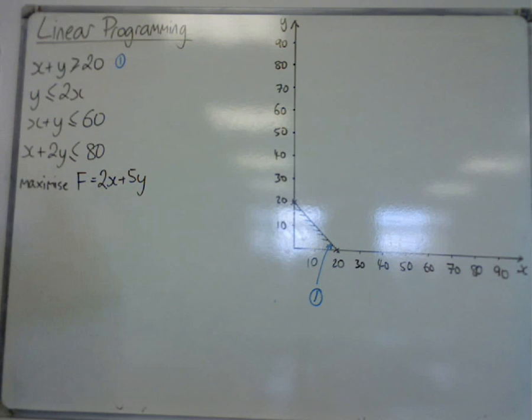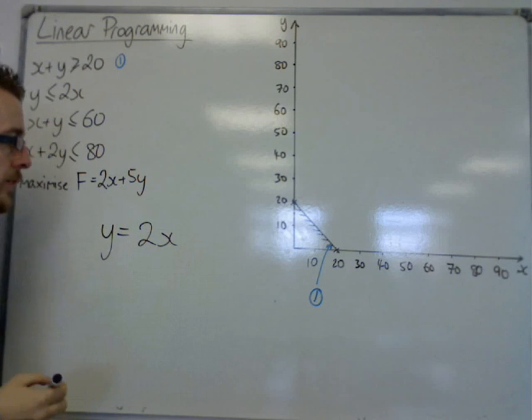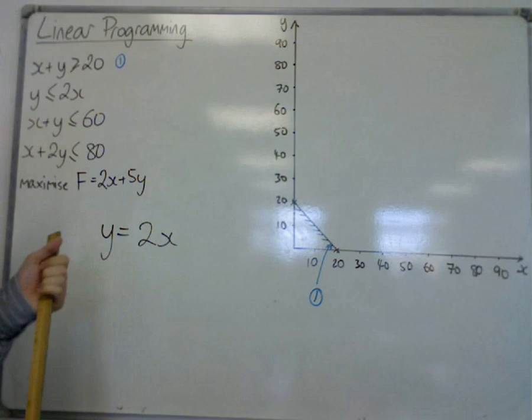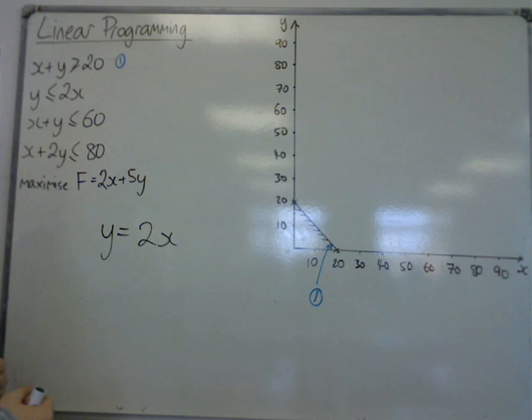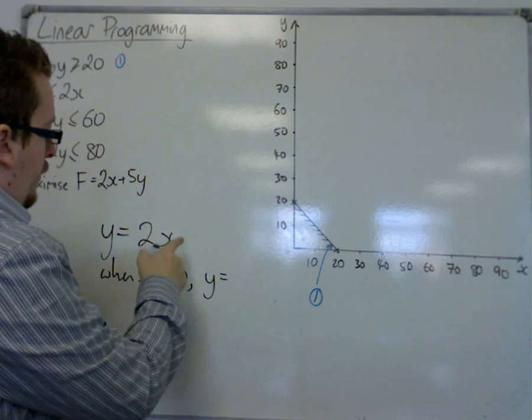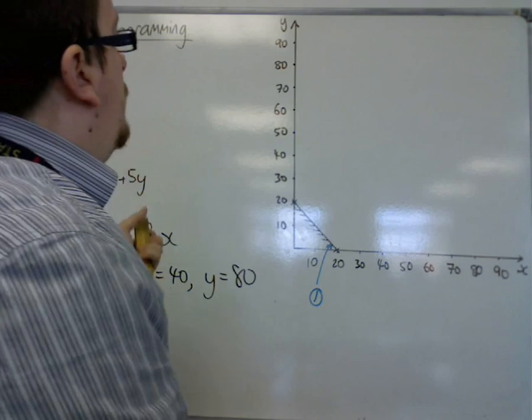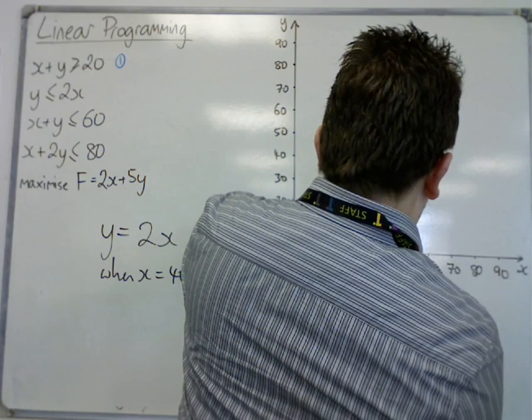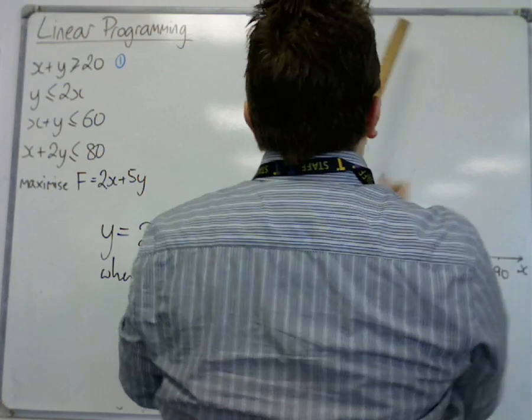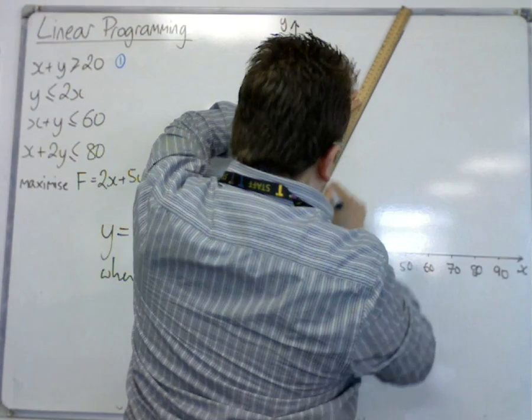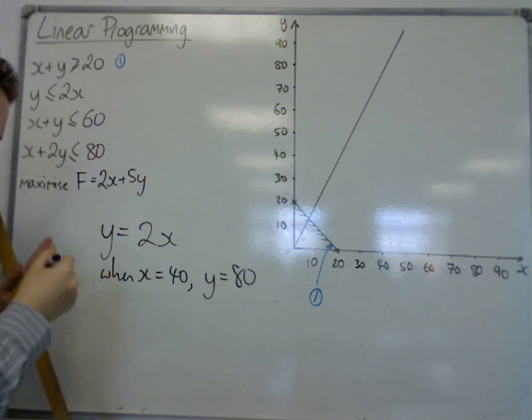Now I've got y is less than or equal to 2x. So we need to draw in the line y equals 2x. Now, you should know that y equals 2x will go through 0, 0. So we just need another point that it goes through. So for that, you could choose any point that you really like. We could try x is 40, for example. So when x is 40, y is 2 lots of 40, so y is 80. So 40, 80 is a point that it goes through. So I'm just going to make sure I've got this right. 40, 80. So I've got it fairly accurate on my graph. So this line looks something like this. Okay. So this is going to be my number 2.